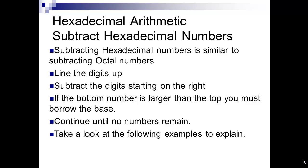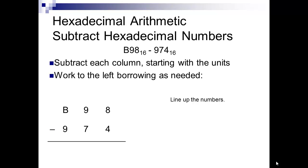Now we're going to go on to hexadecimal. Hexadecimal is the same thing again — you're dealing with that letter-to-number equivalency, but remember you can't deal with letters in your head. You have to convert them to numbers, then convert back to letters if needed. Let's look at B98 minus 976. First, convert B to its number equivalent, which is 11. 8 minus 4 is 4. 9 minus 7 is 2. 11 minus 9 is 2. So our answer is 224, and we didn't have to borrow.